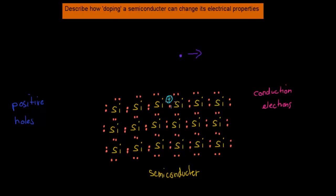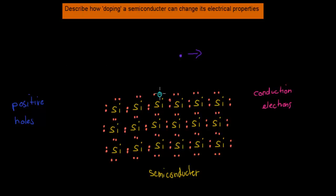This area is slightly more positive because of the lack of electrons. What that means is that the neighboring electron, for example this one here, will jump into that positive hole and take over that position where the electron used to be. That means the positive holes move in one direction and the valence electron in that same lattice is moving in the opposite direction.